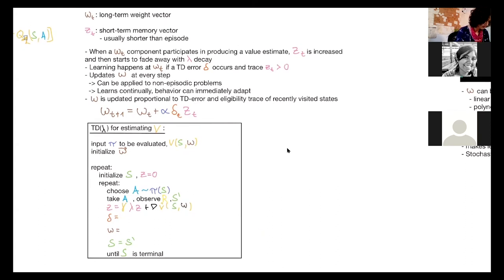We take the next reward that we observed plus the discounted value estimate. So now we write a little hat because it's an approximate function. The approximate value for the next state minus the one for the current state and both under the weight parameters.